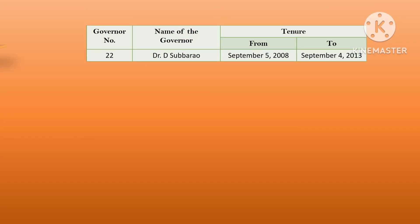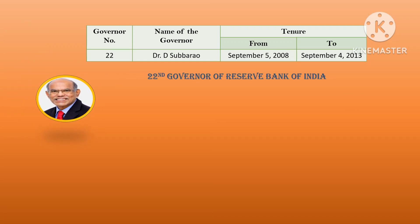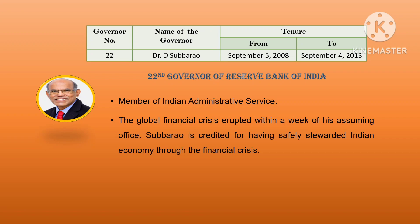The twenty-second governor was Dr. D. Subba Rao. His tenure was from September 5, 2008 till September 4, 2013. He was a member of the Indian Administrative Service. The global financial crisis of 2007-2008 erupted within a week of him assuming office. Subba Rao is credited for having safely stewarded the Indian economy through that financial crisis.